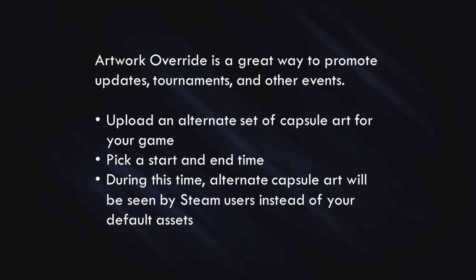Artwork Override is a great way to give your game an alternate look to support a cool event that's happening in your game, and it's also really easy to set up. It involves uploading an alternate set of capsule art for your game. You pick a start and end time, and during this time that alternate capsule art will be seen by Steam users instead of your normal default assets. That's why it's called Artwork Override — your normal default artwork is being overridden by the new artwork you've created to support your event.